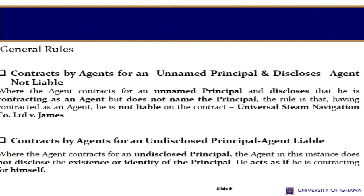What if the agent doesn't name the principal, but discloses that he is acting as an agent? In the first instance, he indicated who the principal is and disclosed he is acting as an agent. In this second instance, even though he discloses that he is acting as an agent, he doesn't indicate the principal. He has acted for an unnamed principal but disclosed the relationship. In this instance, he would also not be held liable for the obligations under the contract or for breach.